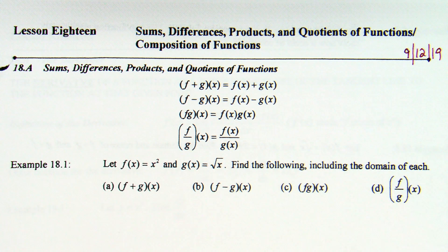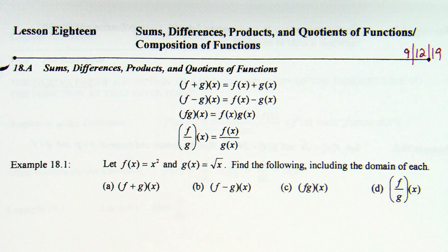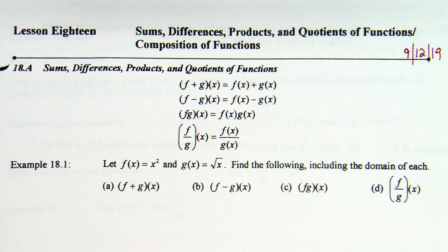Same general idea — we are talking about functions and composition of functions. At the top there are some basic rules. These are not new to you. If you have f plus g of x, that is the same as adding f of x and g of x. If you have f minus g, that's f of x minus g of x. Same thing with multiplication: fg is f of x times g of x. And with division, f over g is f of x divided by g of x.